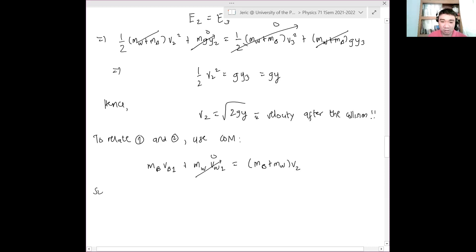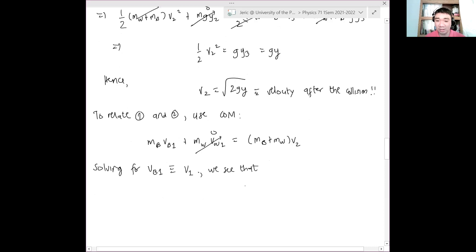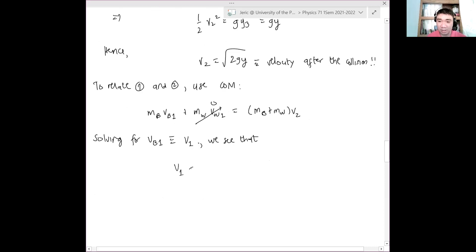solving for VB1, which is the velocity of the bullet at the first state, which is now we set as V1, and we see that V1 is just equal to what?